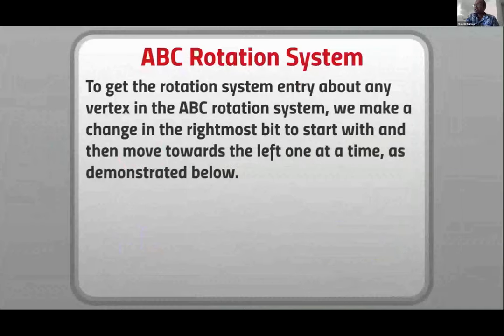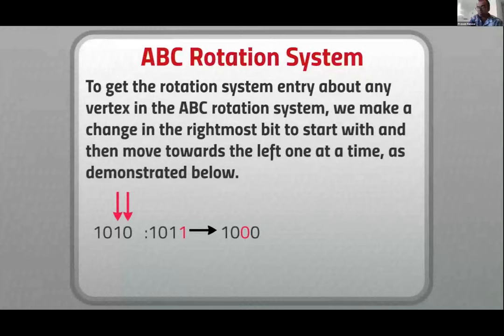We defined a specific rotation system for our purposes called the ABC rotation system, which stands for Alternate Bit Change Rotation System. The process is very simple. Let's say I'm in Q4 and I'm on vertex number 10. I write 10 in binary form, which is 1010. The first entry in the rotation system is obtained by complementing the rightmost bit, so I get 1011. The next entry is obtained by complementing the bit to the left of the rightmost, and so on. Because this is Q4, each vertex has a degree of 4, so I have the right rotation system for each vertex.